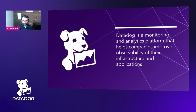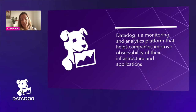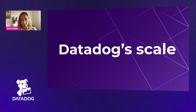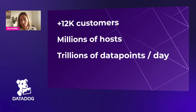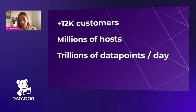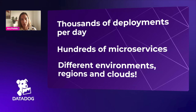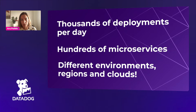Datadog is a monitoring and analytics platform that helps companies improve observability of their infrastructure and applications. To talk about anything related to engineering at Datadog, it's important to introduce the scale we're running at: more than 12,000 customers, millions of monitored hosts, and we process trillions of data points per day. When it comes to deploying Datadog itself, we do thousands of deployments per day to hundreds of microservices across different environments, regions, and clouds.